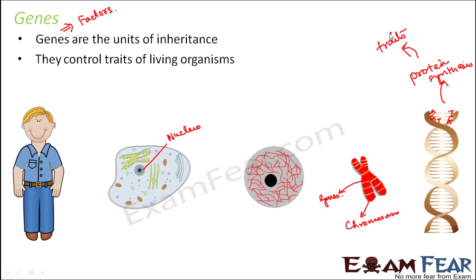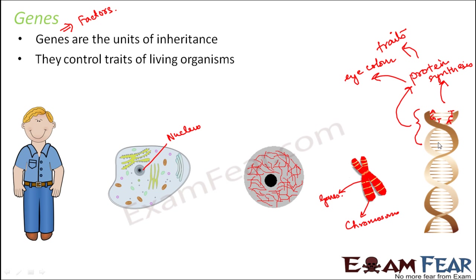The DNA is present within the gene. So a particular sequence of bases in one region of the DNA will code for proteins responsible for, say, eye color — that sequence determines what color the eye will be. Similarly, the sequence of bases in another region will cause protein synthesis responsible for hair color. So a particular section of the DNA will determine a particular trait. This is how genes control the traits of living organisms.